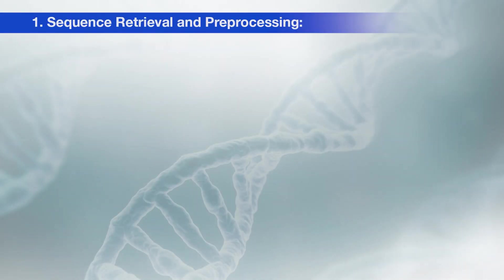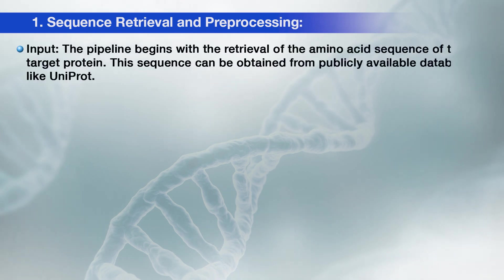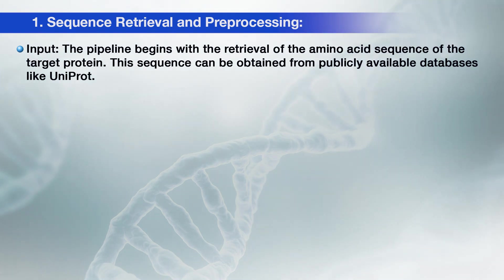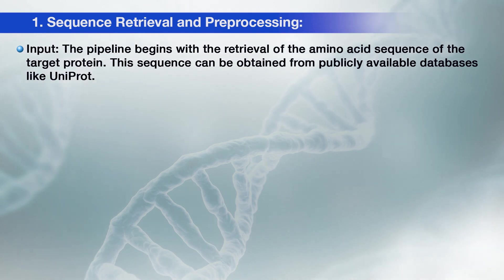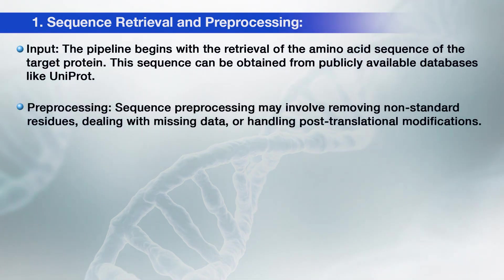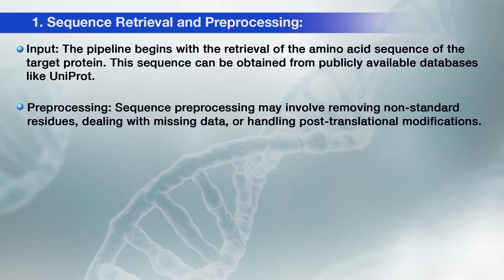The first step is sequence retrieval and preprocessing. The pipeline begins with the retrieval of the amino acid sequence of the target protein. This sequence can be obtained from publicly available databases like UniProt. Preprocessing may involve removing non-standard residues, dealing with missing data, or handling post-translational modifications.